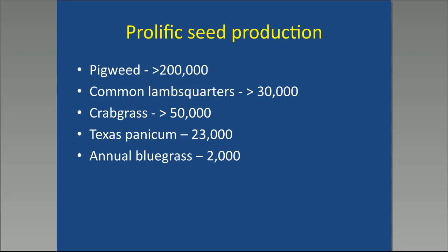A lot of other common weed species share that same characteristic — they produce a lot of seed. This is true for annual species, not only broadleaves but grasses as well. You can see crabgrass, Texas panicum, even annual bluegrass, which is poa annua, that grows in your yard during the winter. Even those little poa annua plants can give you thousands of seeds per plant. Understanding the biology and ecology of these plants tells us how to control them.